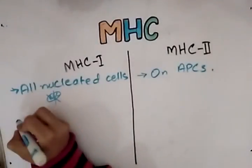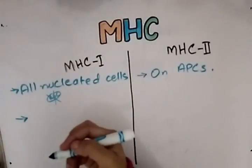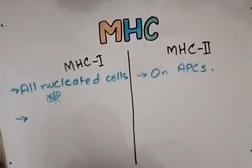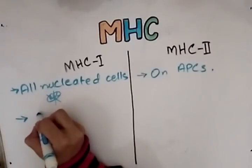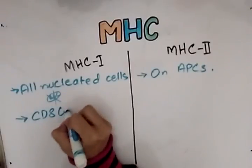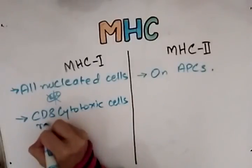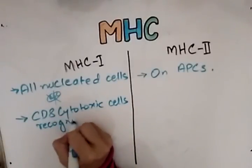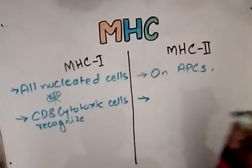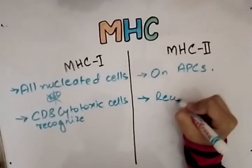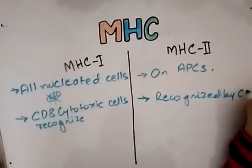The next difference is that MHC1 — we have the rule of eight — CD8 cells recognize MHC1. So MHC1 is recognized by CD8, or cytotoxic cells. And MHC2 is recognized by CD4 cells.